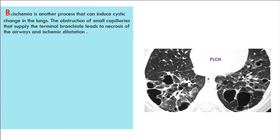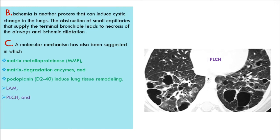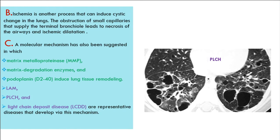B. Ischemia is another process that can induce cystic change in the lungs. Obstruction of small capillaries supplying the terminal bronchiole leads to necrosis of the airways and ischemic dilatation. C. A molecular mechanism has also been suggested, in which matrix metalloproteinase (MMP), matrix degradation enzymes, and podoplanin (D2-40) induce lung tissue remodeling. LAM, PLCH, and light chain deposit disease (LCDD) are representative diseases that develop via this mechanism.